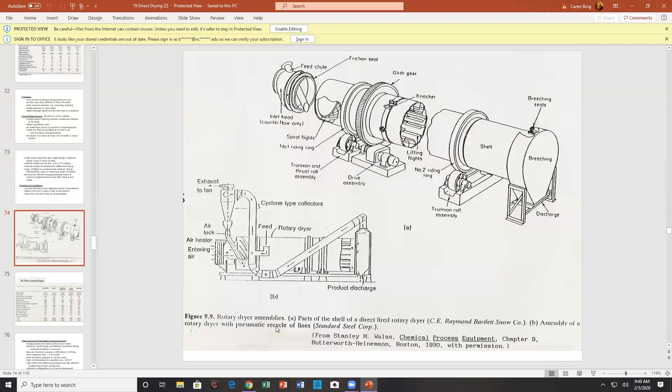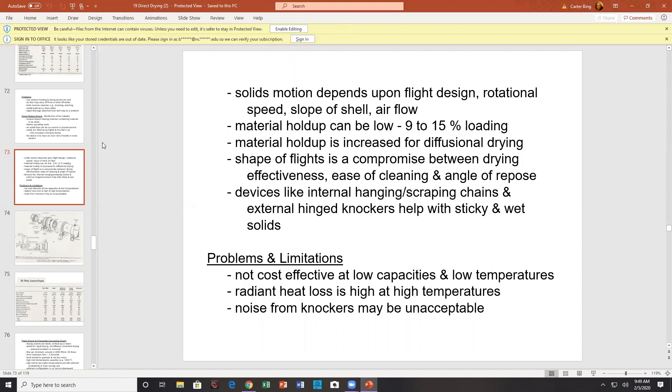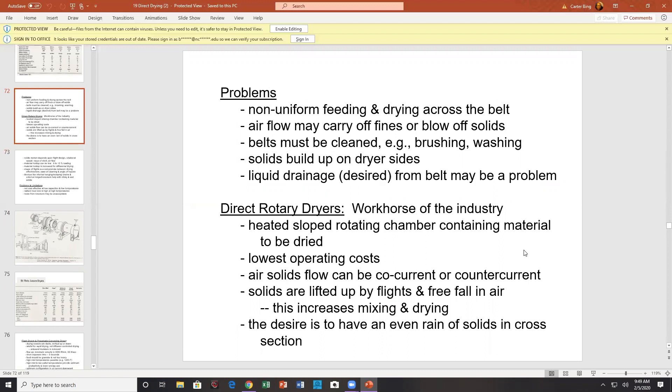Air flow may carry off the fines. Belts must be cleaned, brushing or washing. Washing may require drying operation after the washing. Solids blow up on the walls. Direct rotary, now this is a workhorse. Let me give you an idea of a rotary dryer. Here you go, rotating. You have the trunnions here. You have the feed coming in or feed chute coming in. You have lifting veins. Hopefully there's a nice rain of solids across the dryer area here. And then down here you have the discharge. And hopefully the solids are flowable enough to be able to be picked up and dropped, basically. So there is some attrition going on.